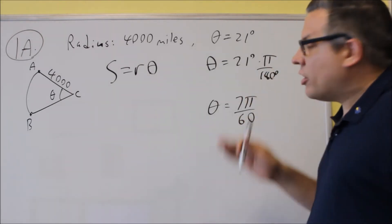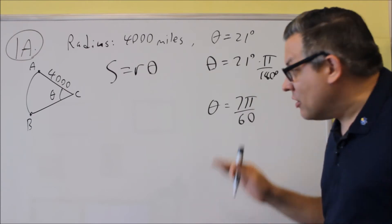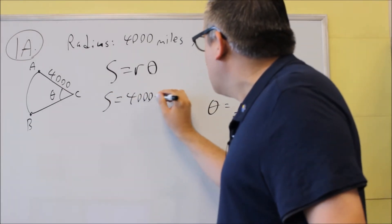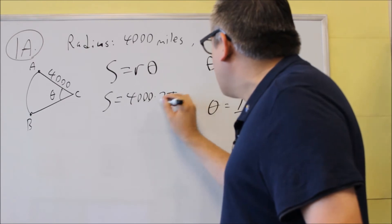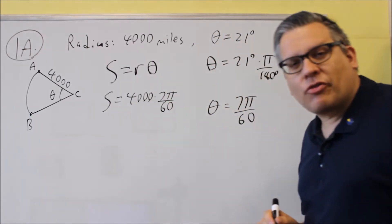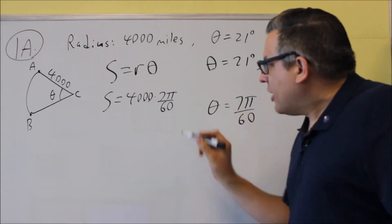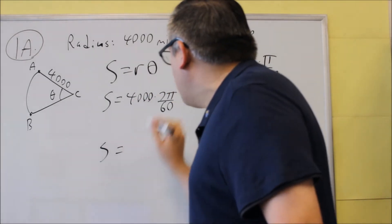You don't want to use 21. That's in degrees. You want to change it into radians. So arc length is equal to 4,000, and we're going to multiply it by 7 pi over 60, which is our theta. You're going to multiply across the top, across the bottom, and reduce.